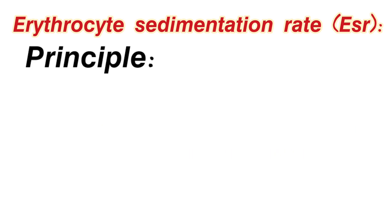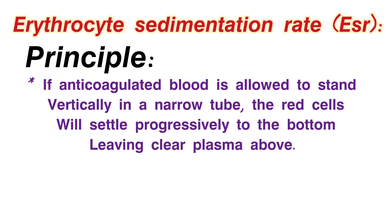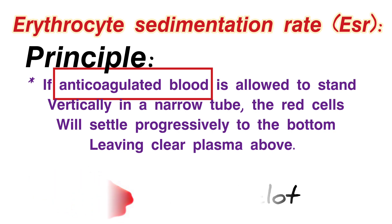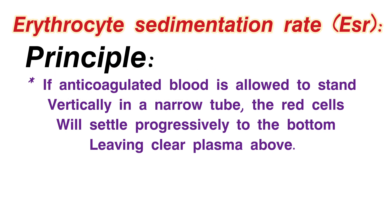Next is the principle of ESR. Here we use anti-coagulated blood. Normally, blood clots, so when we add anti-coagulant chemicals to the patient's blood sample, we prevent it from clotting before placing it in the tube.